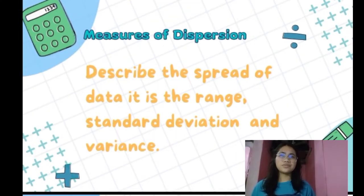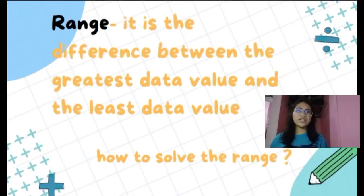Measures of dispersion describe the spread of data. They are the range, standard deviation, and variance. Range is the difference between the greatest data value and the least data value.